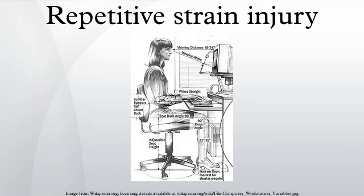A repetitive strain injury is an injury to the musculoskeletal and nervous systems that may be caused by repetitive tasks, forceful exertions, vibrations, mechanical compression, or sustained or awkward positions. RSIs are also known as cumulative trauma disorders, repetitive stress injuries, repetitive motion injuries or disorders, musculoskeletal disorders, and occupational or sports overuse syndromes.